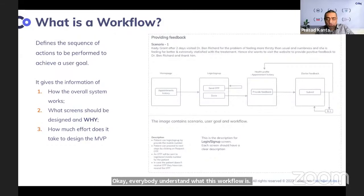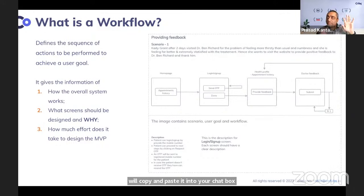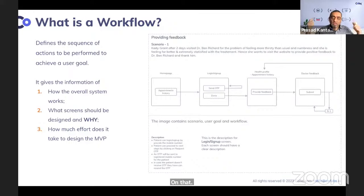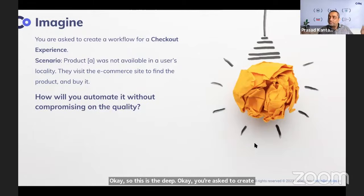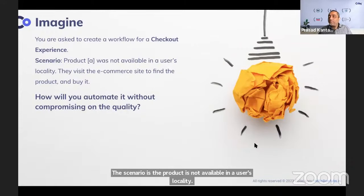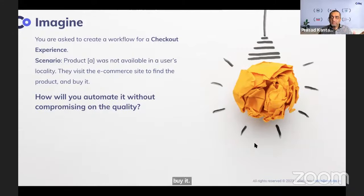For this task, the scenario is: a product is not available in a user's locality, so they visit an e-commerce site to find and buy it. That is the basic checkout workflow scenario. The task will be shown on screen and shared in the chat so you work simultaneously with ChatGPT. How will you automate it without compromising quality?